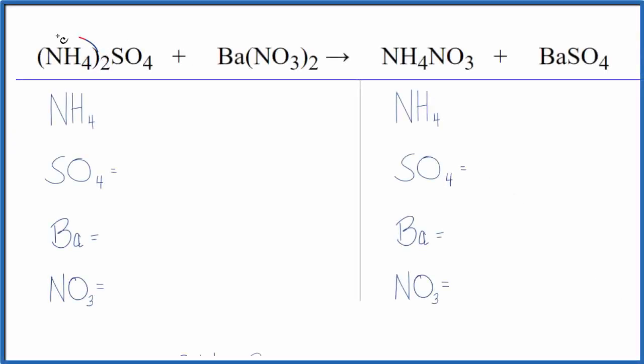To balance this equation we have ammonium sulfate plus barium nitrate. So to do this we're gonna use a bit of a trick. It's gonna make it a lot easier.